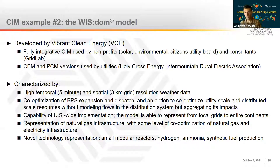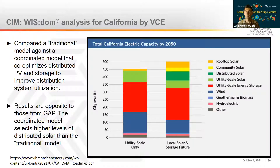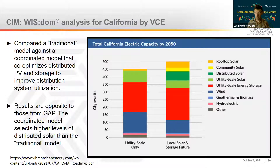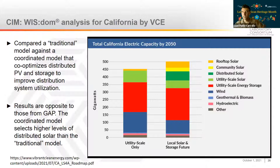The GAP model is much more geared toward regional representation. A recent result for California compared the model run without distributed resources available against the model with local solar available — rooftop, community, and distributed solar — producing substantial savings when available. Interestingly, these results are opposite to what the GAP model showed for this Northern California utility, which underscores the need to make these tools comparable and to make sure the assumptions and basic modeling frameworks are also comparable to each other.